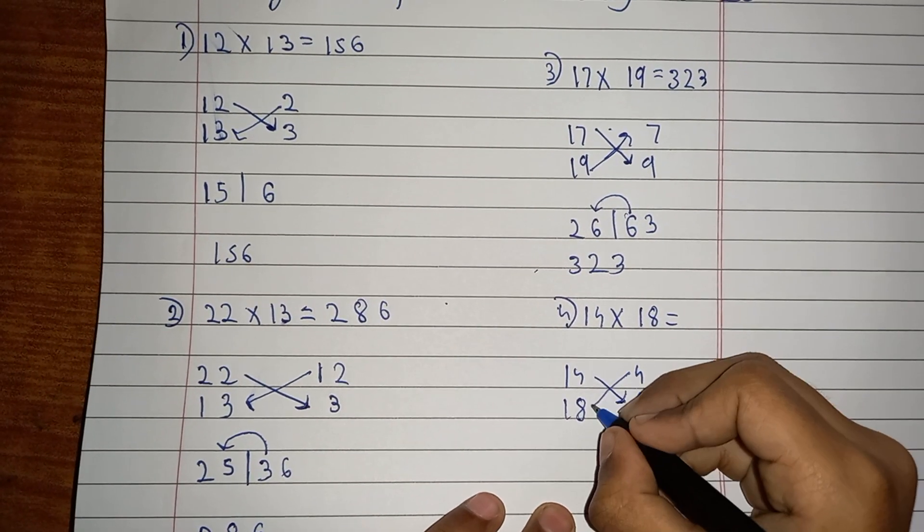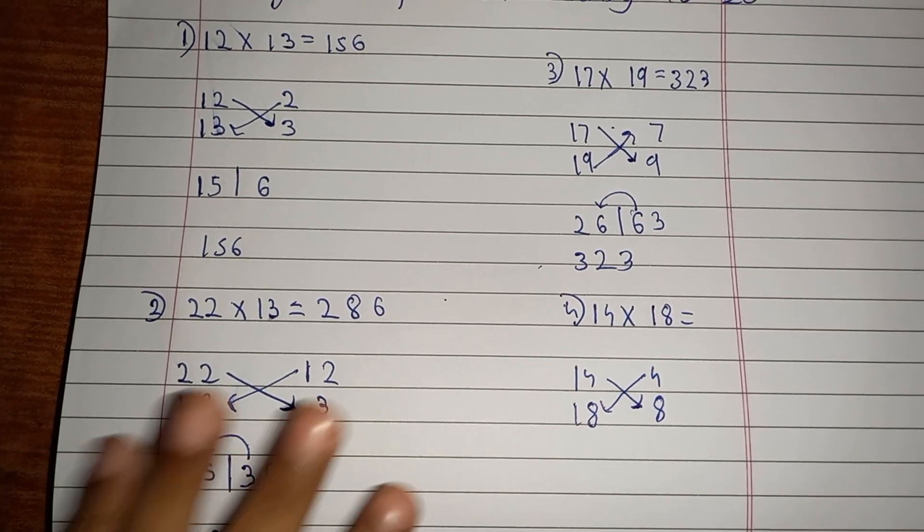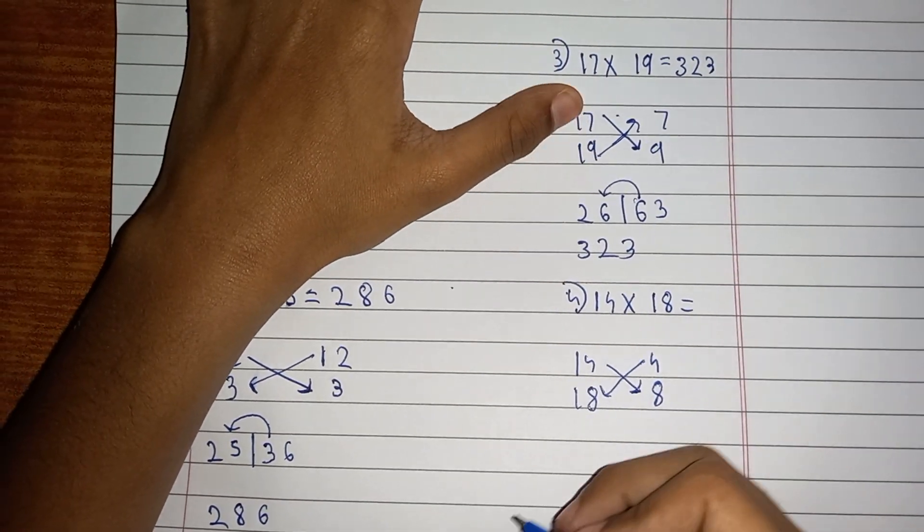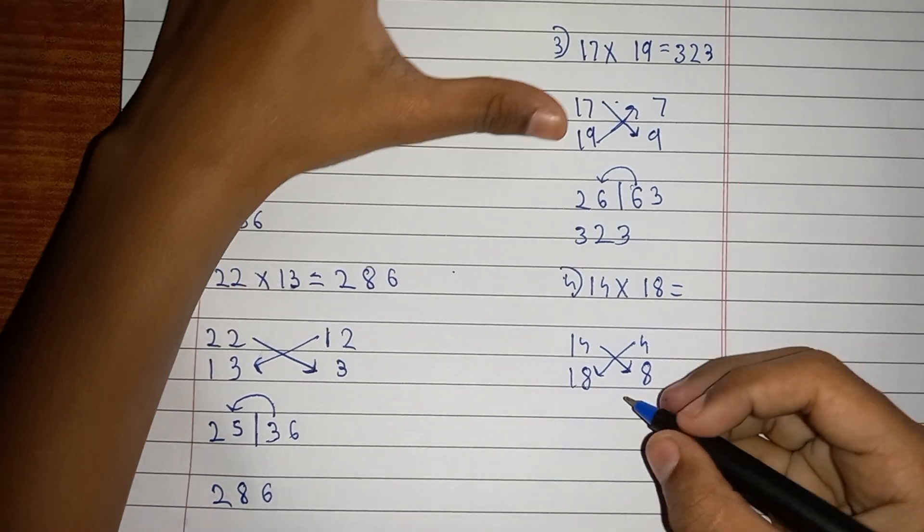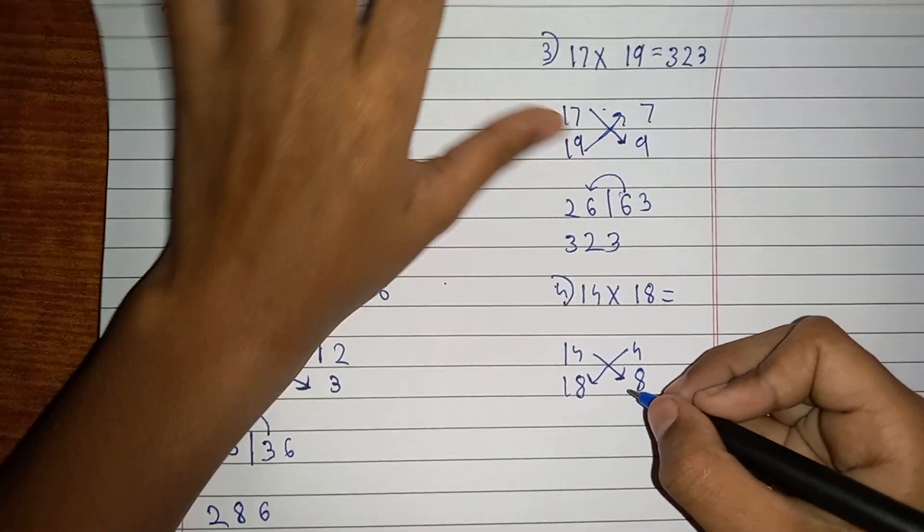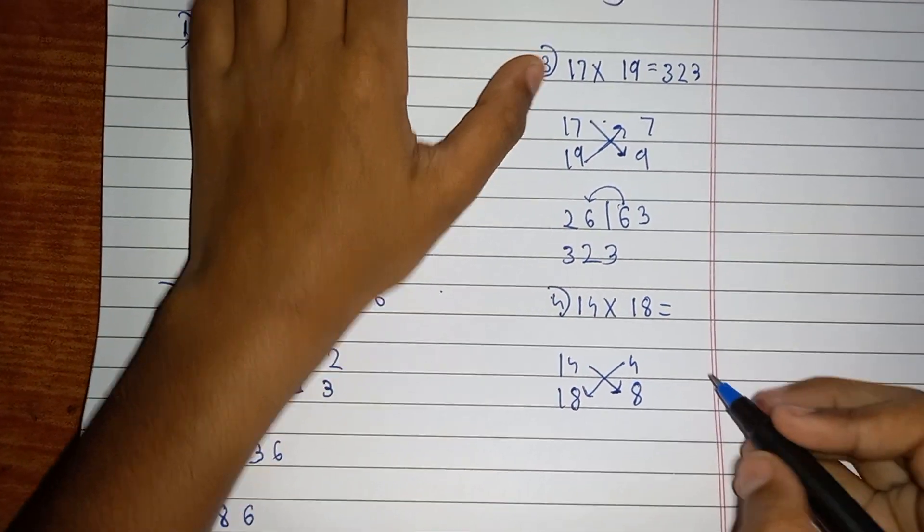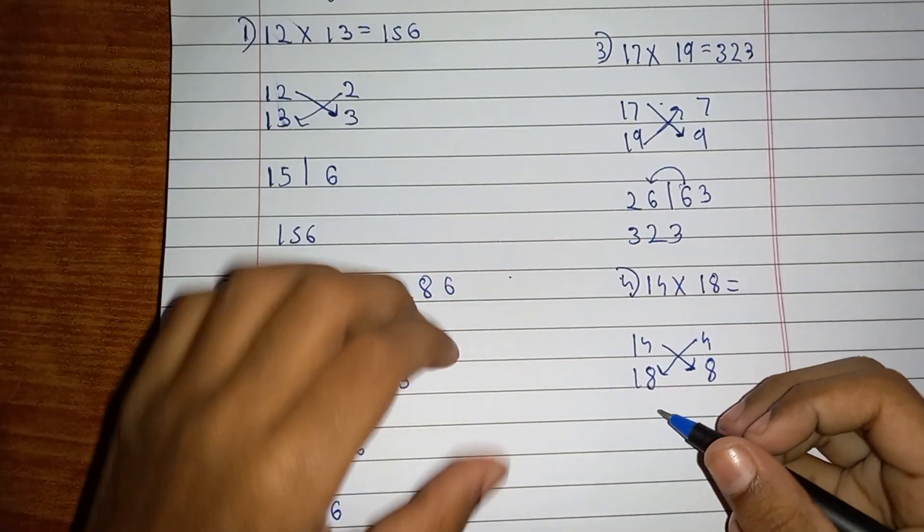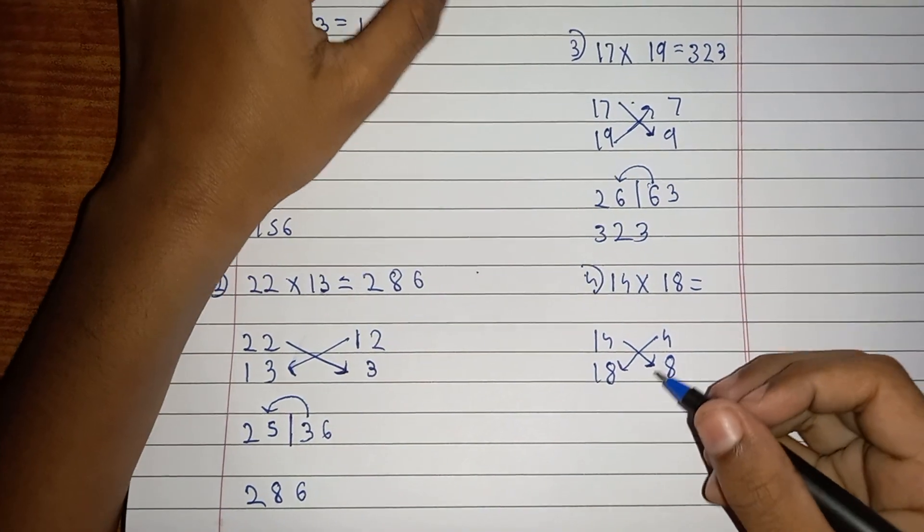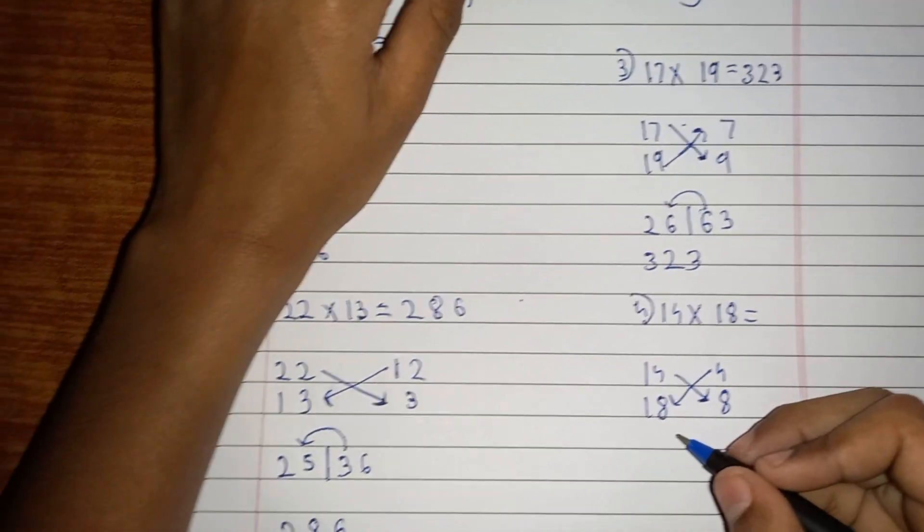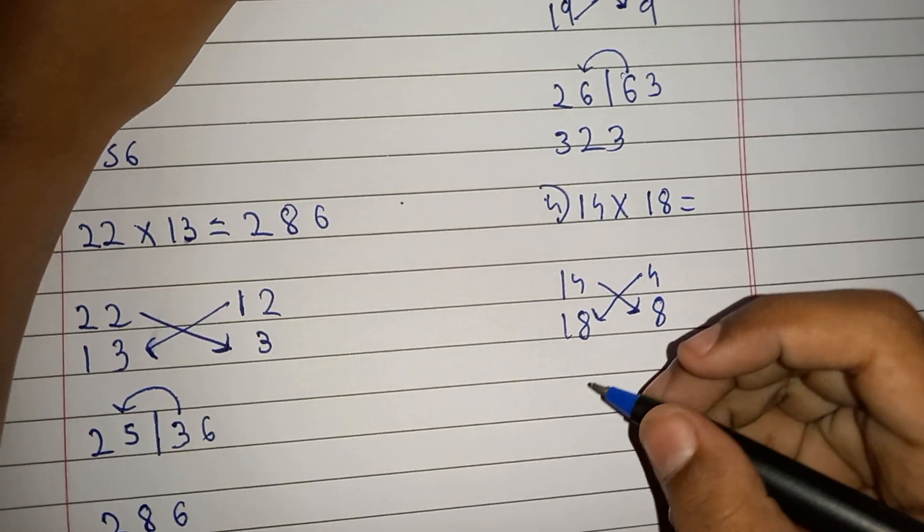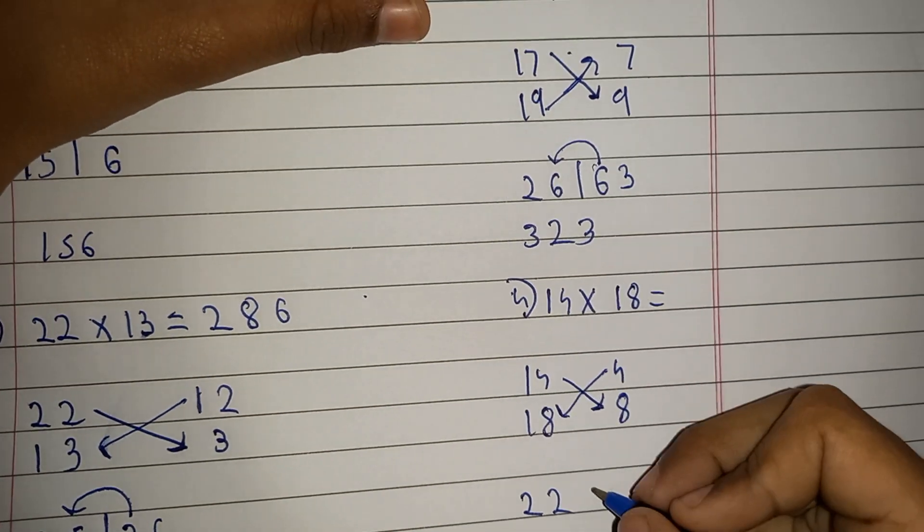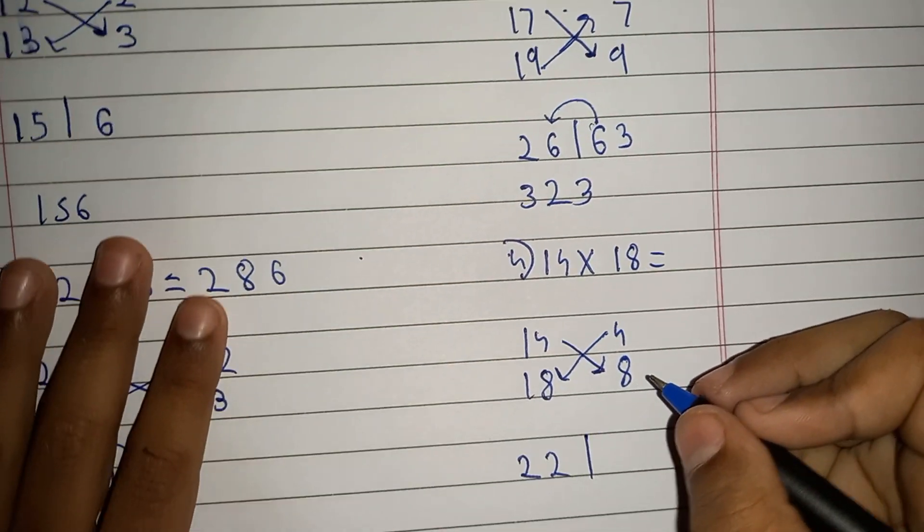Now we have to write 18 plus 4, wait, it is 22. Keep a line. Then 4 times 8 is 32.